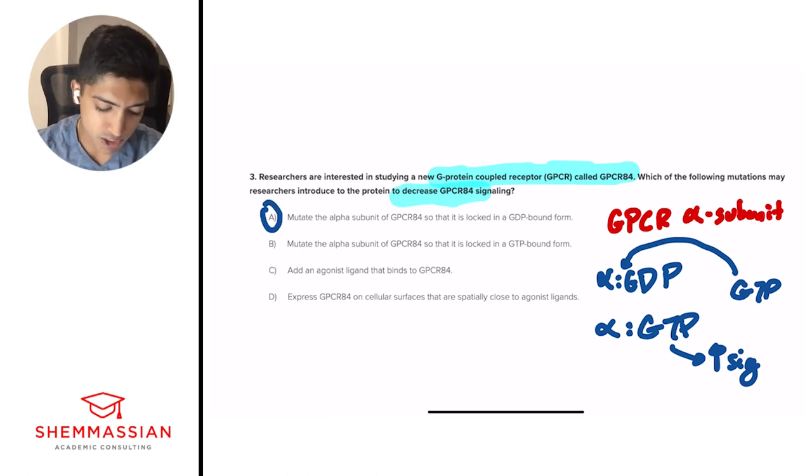But let's just take a look at B. Mutate the alpha subunit of GPCR 84 so that it is locked in a GTP bound form. Well, like we said, if GTP is bound, then we're going to have increased signaling. We're going to have that increased level of intracellular signaling, which will allow more and more signaling to occur. So we can eliminate B. And you can see A and B are the same answers, but with mildly different parts to it, whether it's GDP or GTP bound.